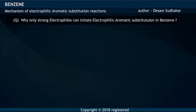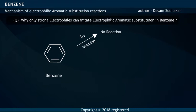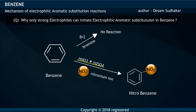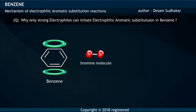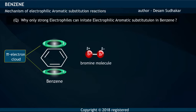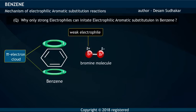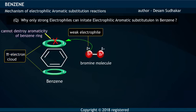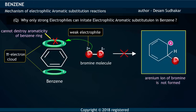Let us explain why only strong electrophiles can initiate electrophilic aromatic substitution in Benzene. For example, Benzene does not react with a Bromine molecule, whereas it reacts with a nitrating mixture — a mixture of concentrated nitric acid and sulfuric acid — to form Nitrobenzene. A Bromine molecule approaching the pi-electron cloud of Benzene develops partial positive and partial negative charges on its atoms. The partial positive end of the Bromine molecule acts as a weak electrophile and hence cannot destroy the aromaticity of Benzene to form the Arenium Ion, which is the rate-determining step.